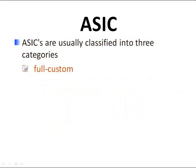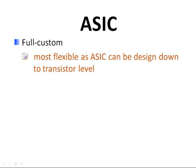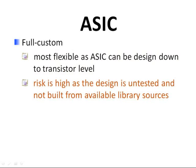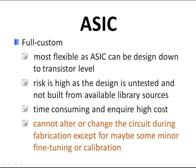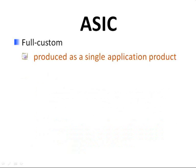ASICs are usually classified into three categories: full custom, semi-custom, and structured. First, let's look at full custom. Full custom is the most flexible, as the ASIC can be designed down to the transistor level. However, the risk is high as the design is untested and not built from available library sources. These are time-consuming and incur high cost. ASICs are tailored from the start of the design process to a specific purpose, leaving no alternative to alter or change the circuit during fabrication except for minor tuning or calibration. This means that full custom ASIC is produced as a single application product.